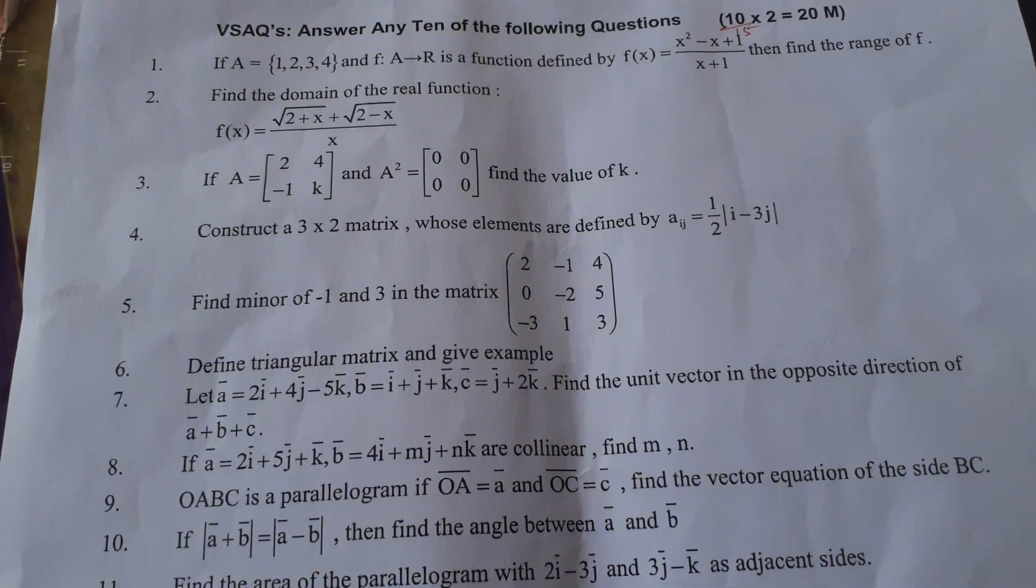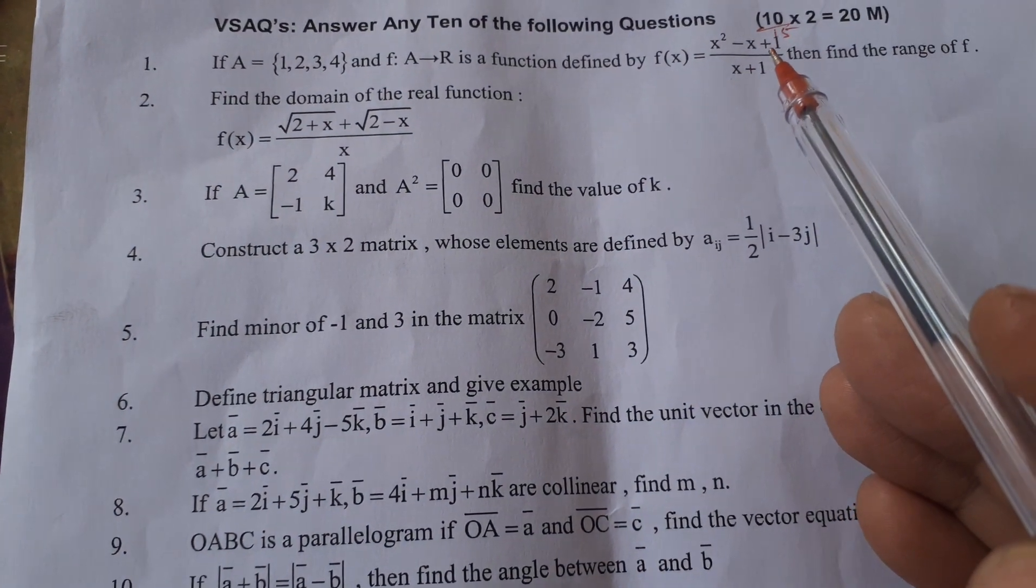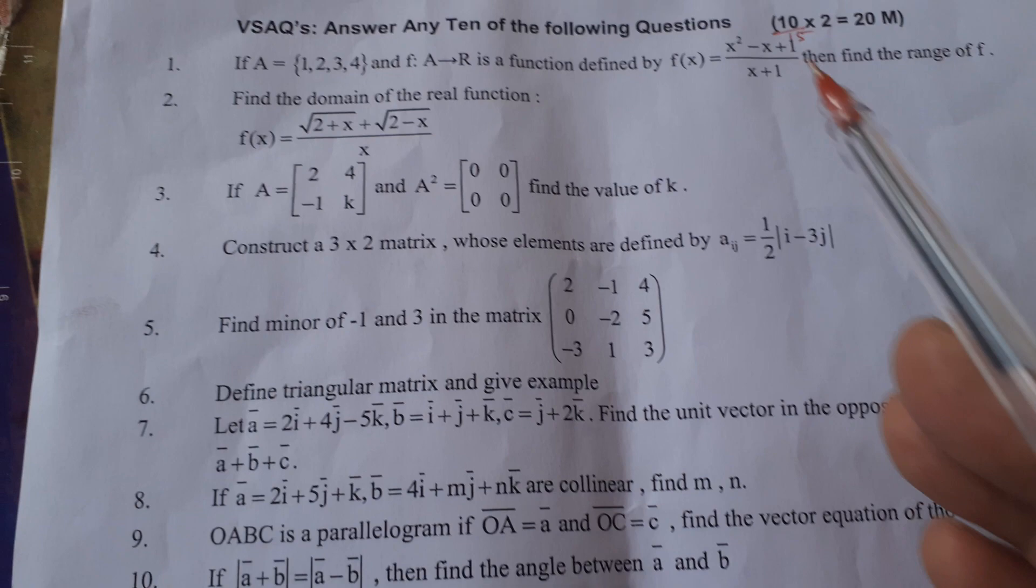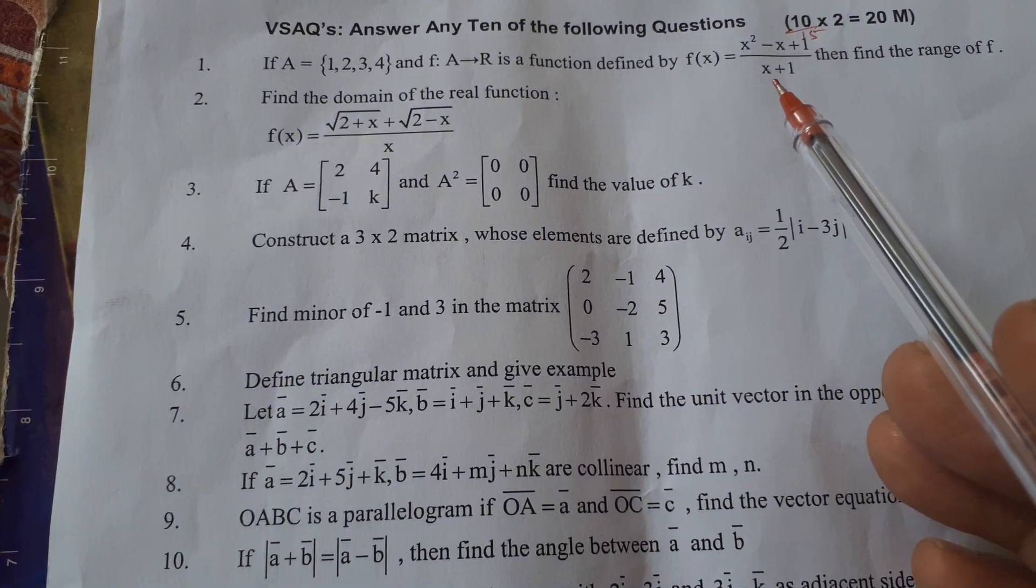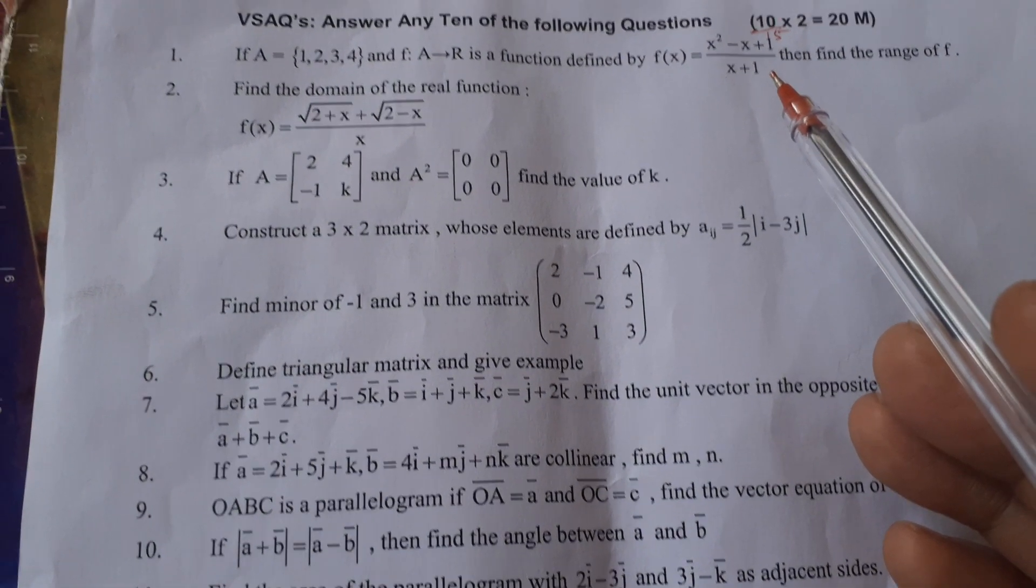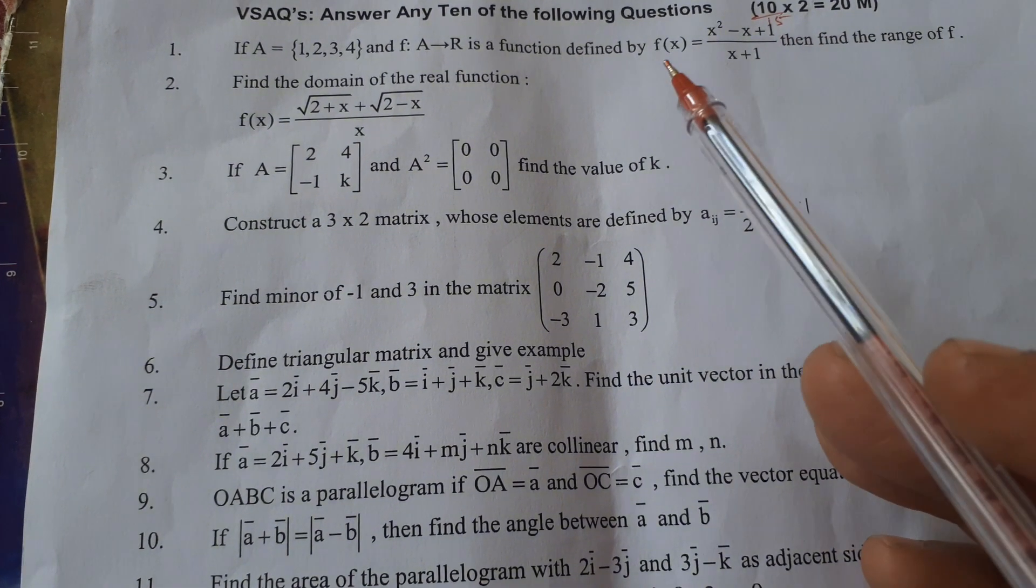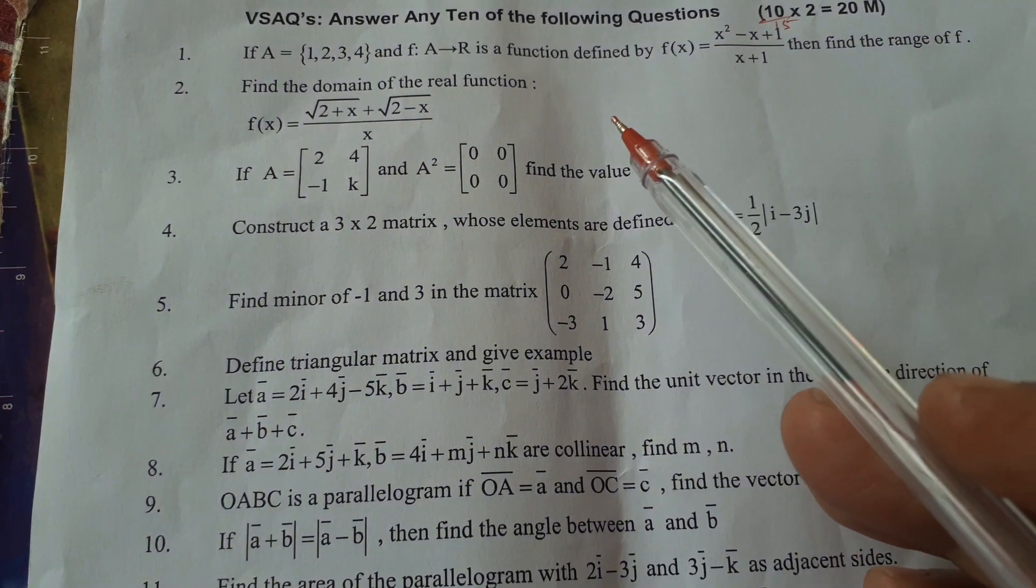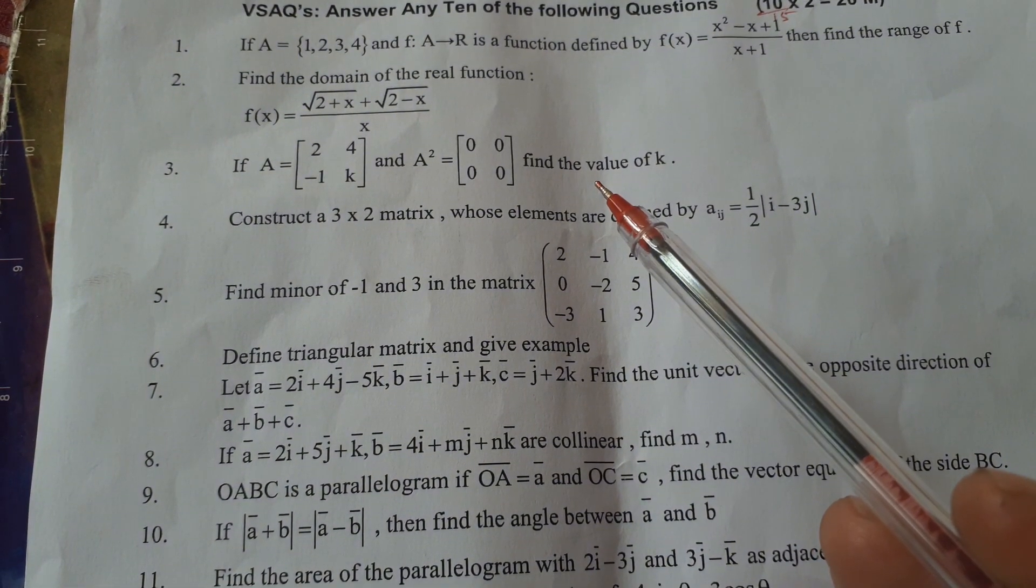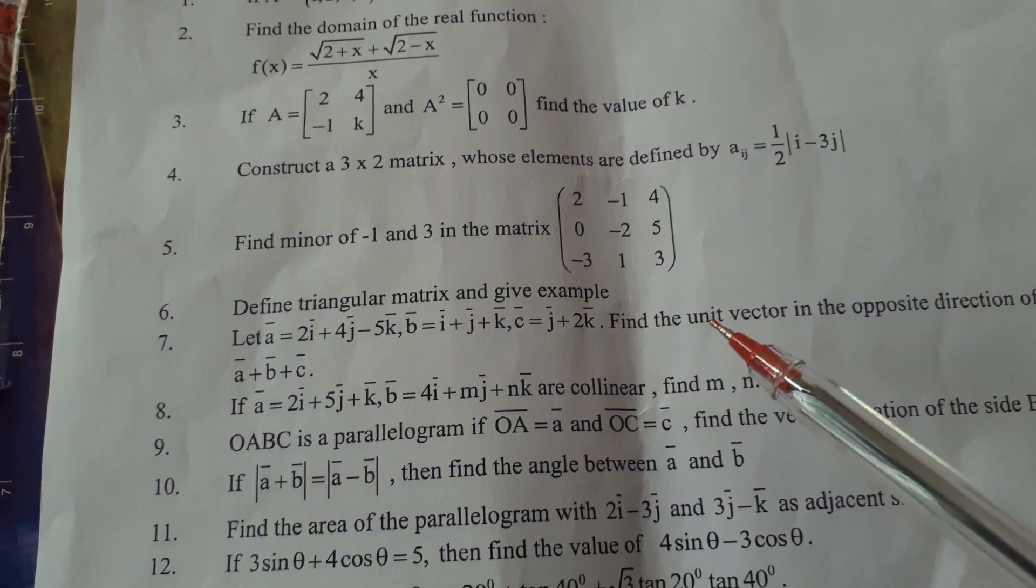Now first is the VSAQ section. In VSAQs, 15 questions are given to you and out of 15, only 10 we have to answer. So plenty of choice is there. Earlier in VSAQ, choice was not there, but now we have choice in the short answer and very short answer questions also. Please have a look at these questions. 15 questions are given in the Maths 1A paper.